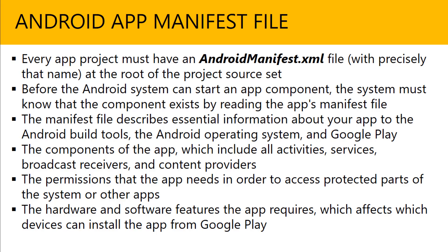The manifest file contains all of the essential information: the components of the app, which includes all activities, services, broadcast receivers, and content providers. If anything is missing, your app is not going to run. The permissions that the app needs in order to access protected parts of the system or other apps are also provided by the manifest file. The hardware and software features the app requires — which affects which devices can install the app from Google Play — are also included.